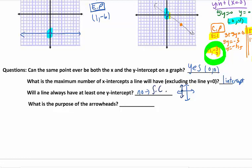What is the purpose of my arrowheads? When we're graphing this, we're only graphing two points, but it goes on infinitely both directions. So there are infinite answers of points that actually work for this linear equation.